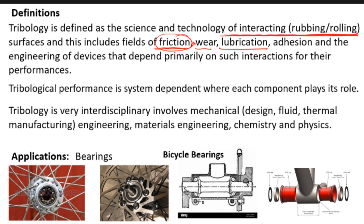Friction leads to wear, and wear is a much more severe problem because wear means material loss — the material that you have no longer remains as it was. It is worn out, and if something is worn out, obviously it cannot be used. For example, if your shoes wear out even a little bit, you feel very uncomfortable walking. In some cases we can live with some amount of wear, but in some cases we cannot.